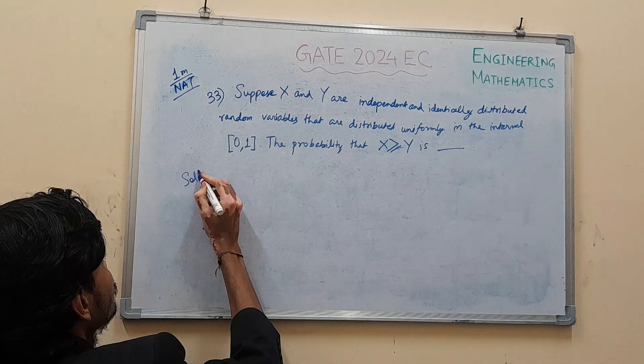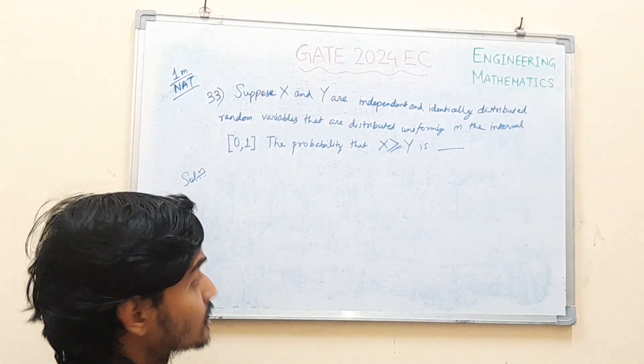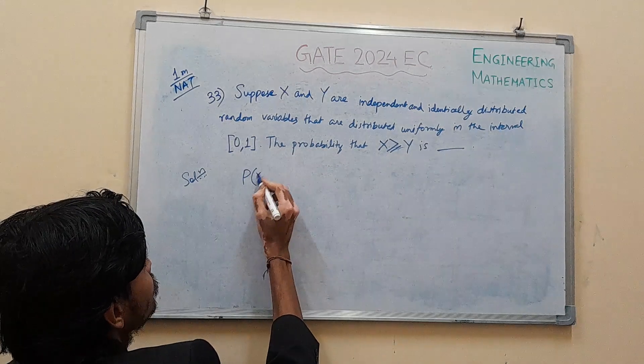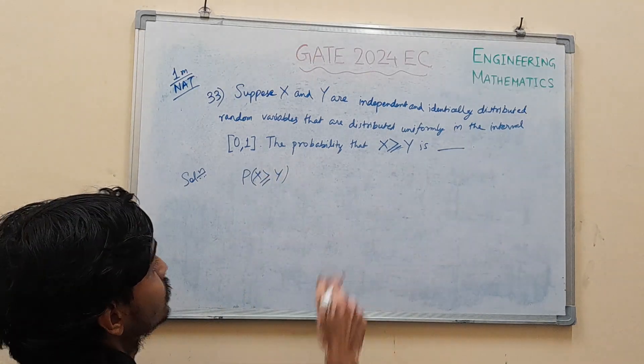There is the solution. What are we going to find? Probability of X greater than equal to Y.